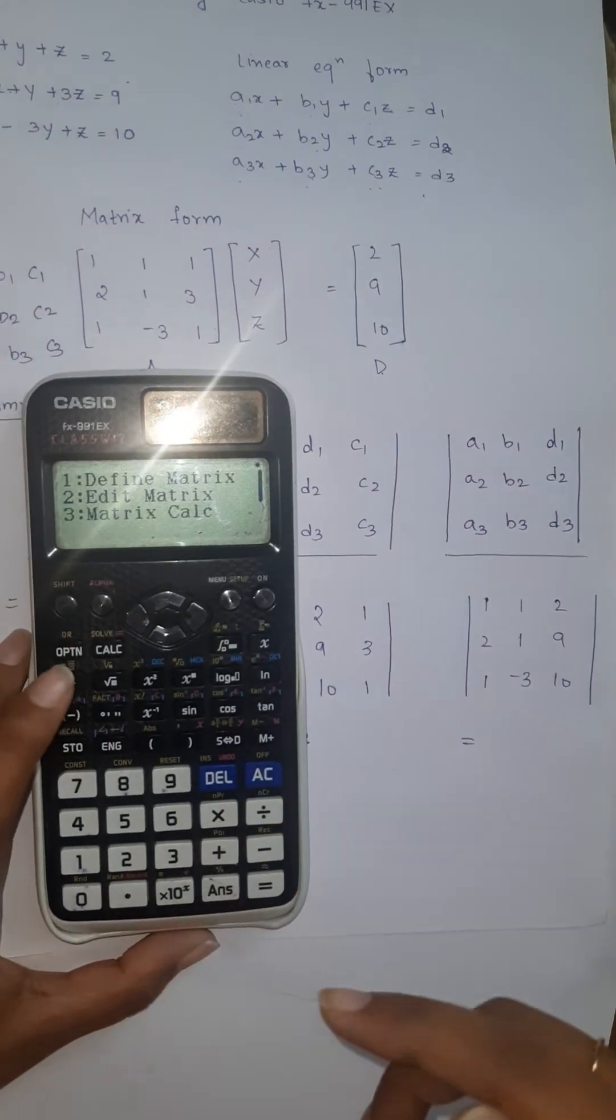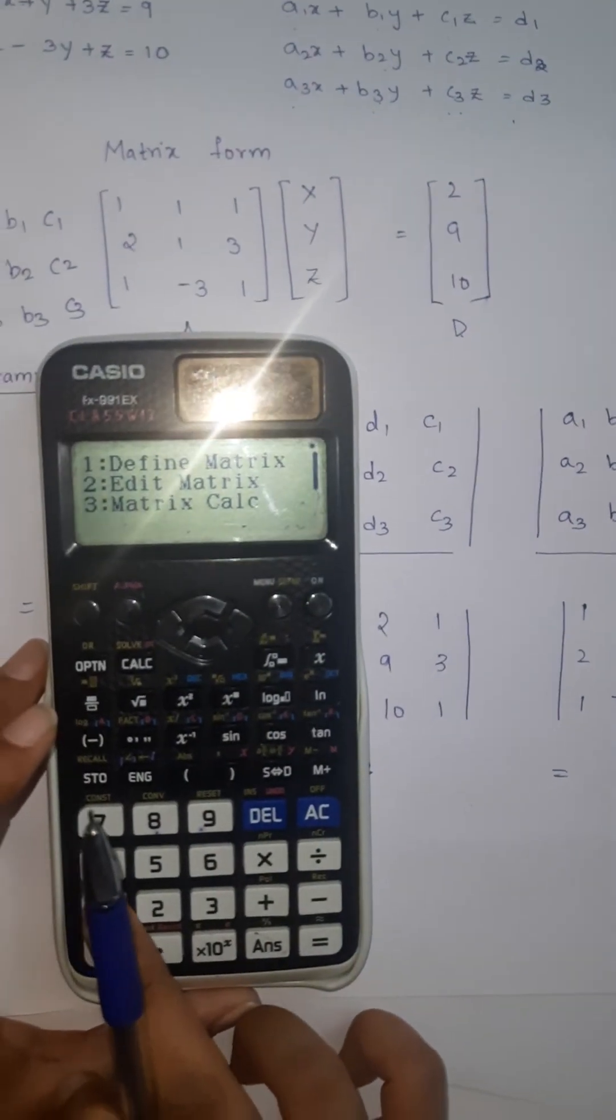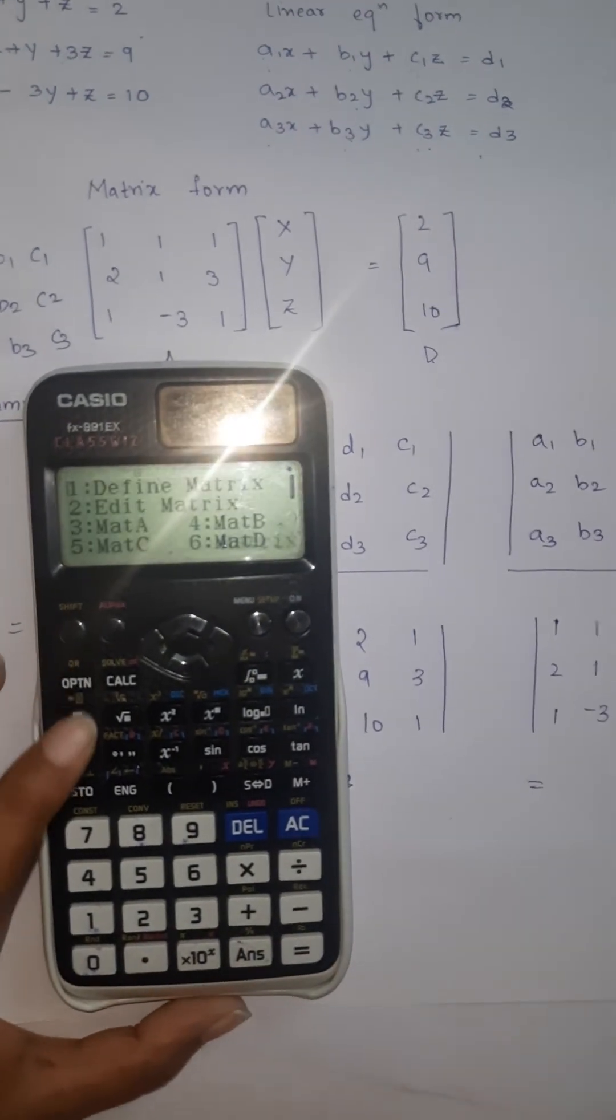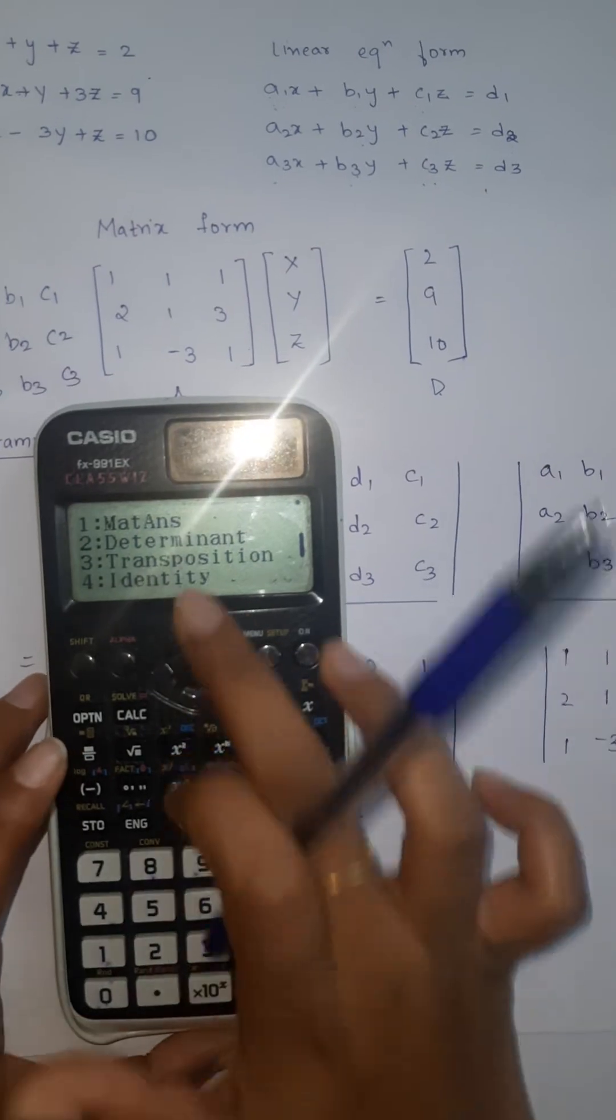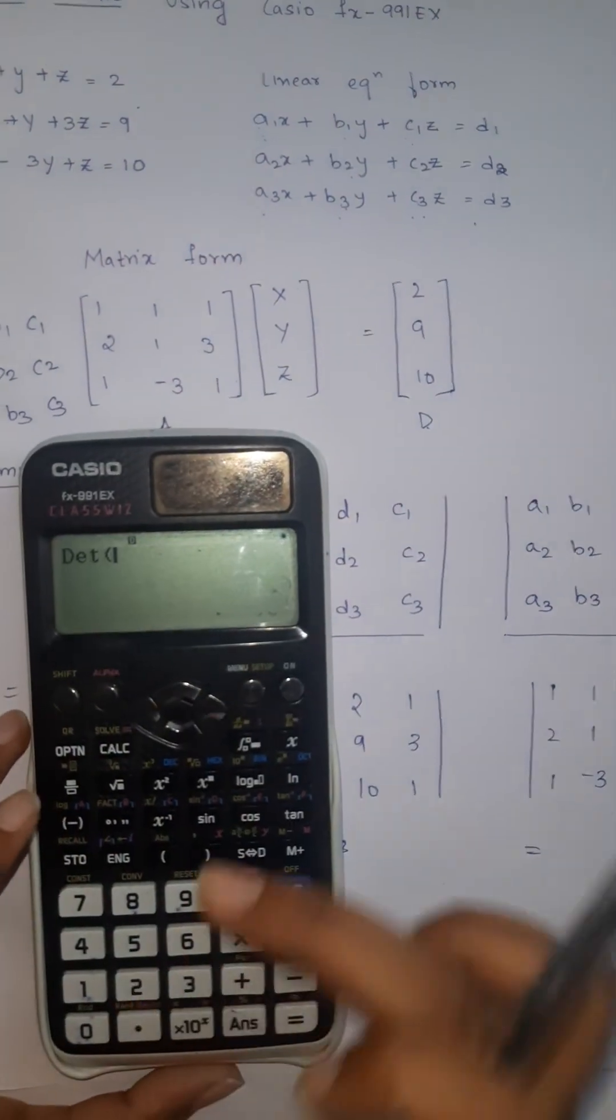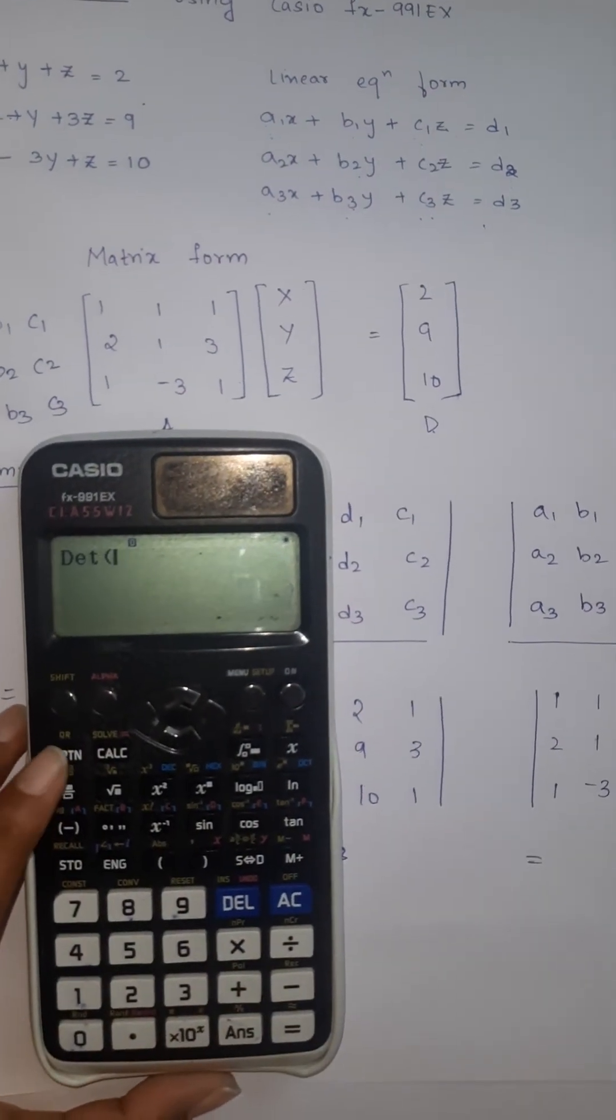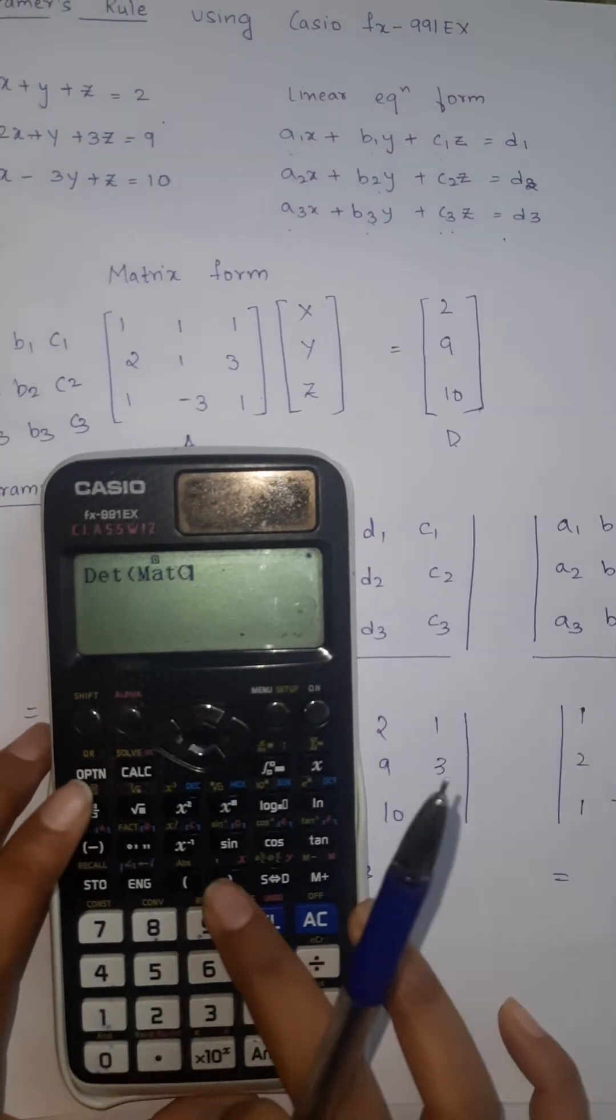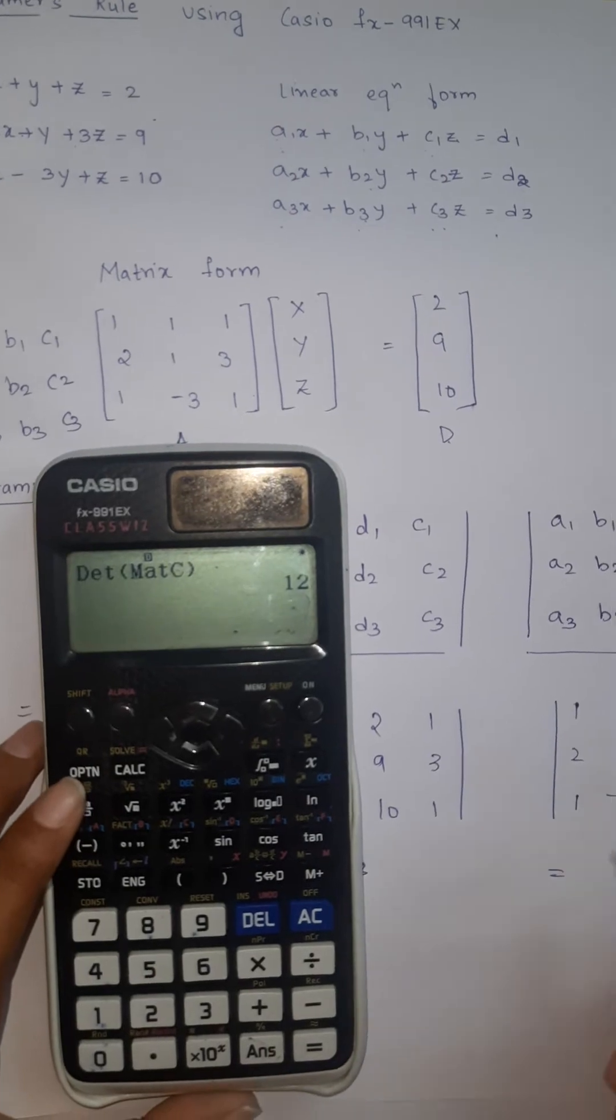Go to option, matrix calculation. Go to option, we need determinant. Click on 2. Determinant of what? The third matrix which we defined. Go to option, third matrix is matrix C. Click on 5, close the bracket. We got 12.